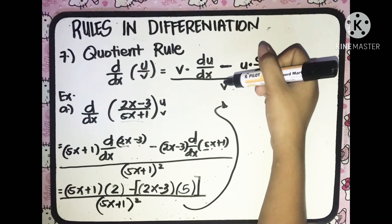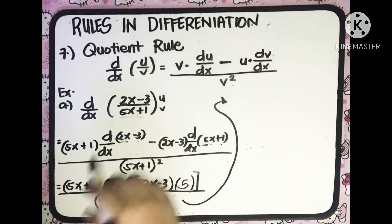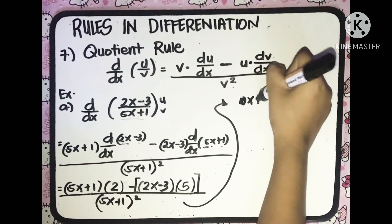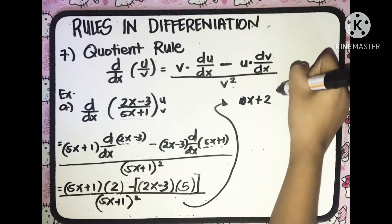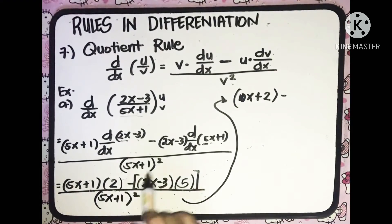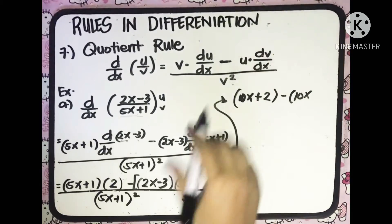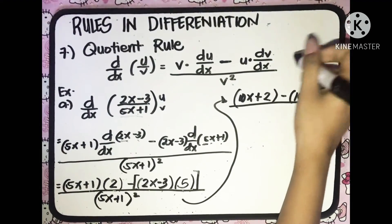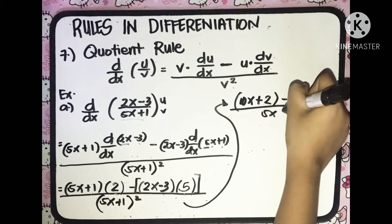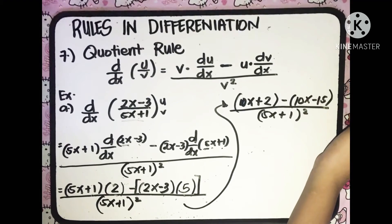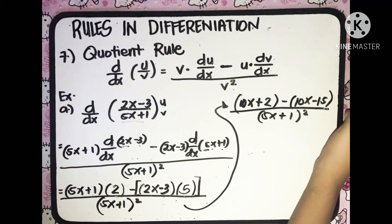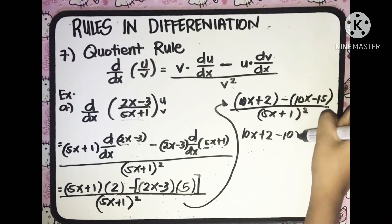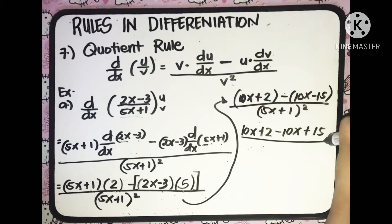Let us distribute 2 in the numerator with (5x plus 1). So we'll have 2 multiplied to 5x, which is 10x, plus 2 multiplied to 1, which is 2. And then minus, 5 multiplied to 2x, which is 10x, and 5 multiplied to negative 3, which is negative 15. All over (5x plus 1) squared. Now let us distribute the negative sign in the numerator: 10x plus 2 minus 10x plus 15, all over (5x plus 1) squared.